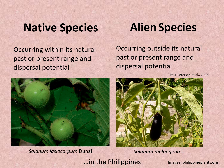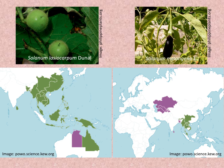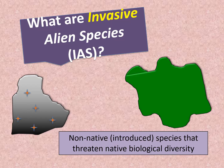For example, Solanum lasiocarpum and Solanum melongena are both occurring in the Philippines. The native range of Solanum lasiocarpum is tropical and subtropical Asia to northern Queensland, and so it is native to the Philippines. On the other hand, the native range of Solanum melongena is South Central China, East Himalaya, Laos, Malaysia, Myanmar, Thailand, and Vietnam. It was introduced in the Philippines, and therefore considered a non-native or alien species.